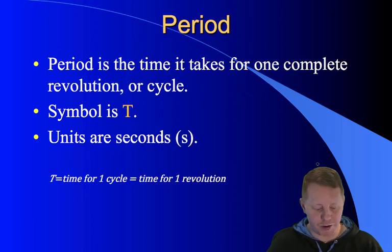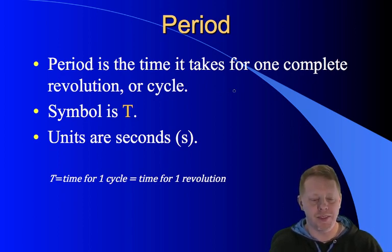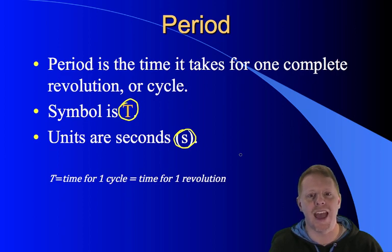Similarly, we could look at period. Period is the time it takes for one complete revolution or cycle or activity. The symbol is a capital T and its units are seconds. If I can eat two donut holes per second, the time it takes to eat each donut hole would be half a second. The period would be half a second.